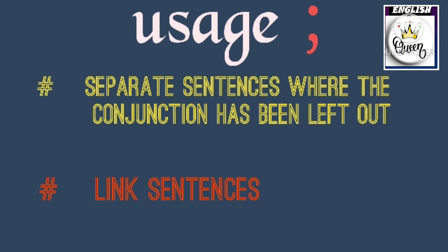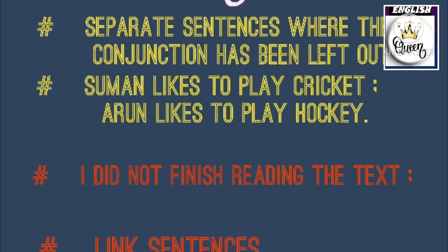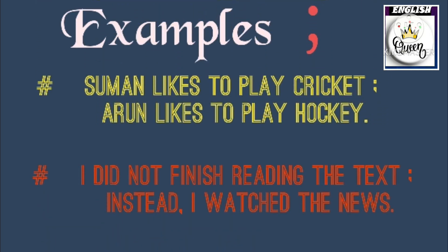The semicolon is used to link two sentences when a conjunction is omitted. So instead of using a conjunction like 'and' or 'but', we use a semicolon to connect the two sentences. Let's see the examples.